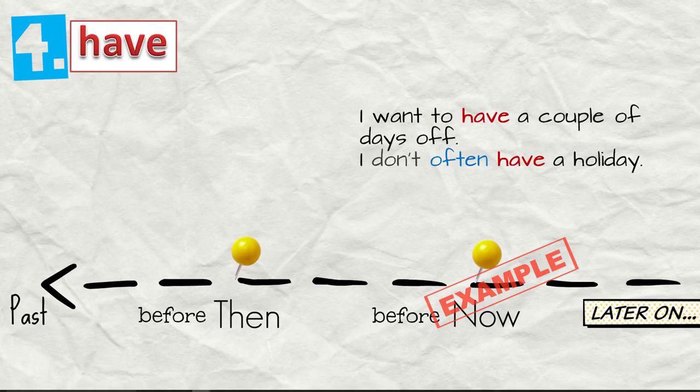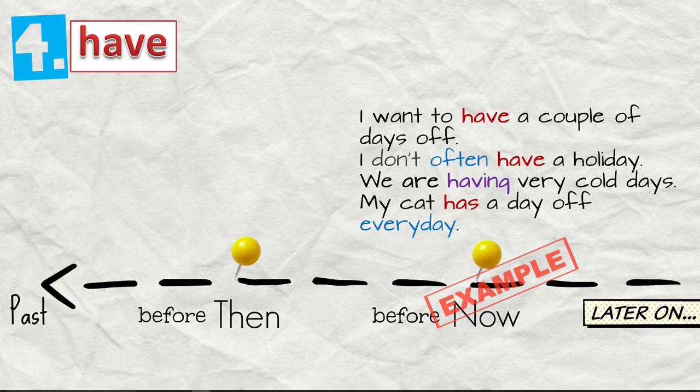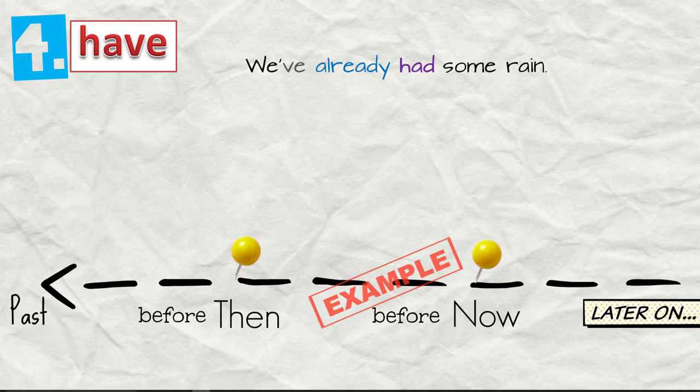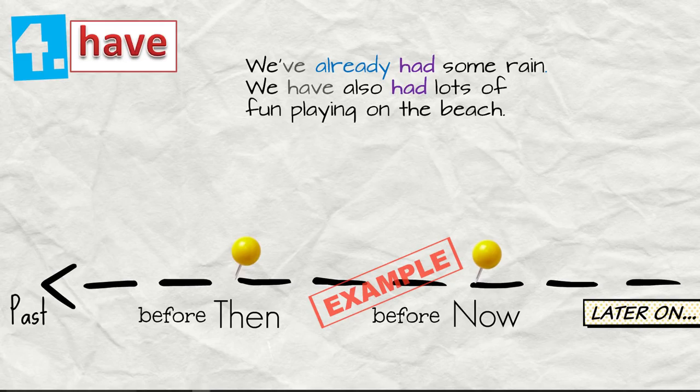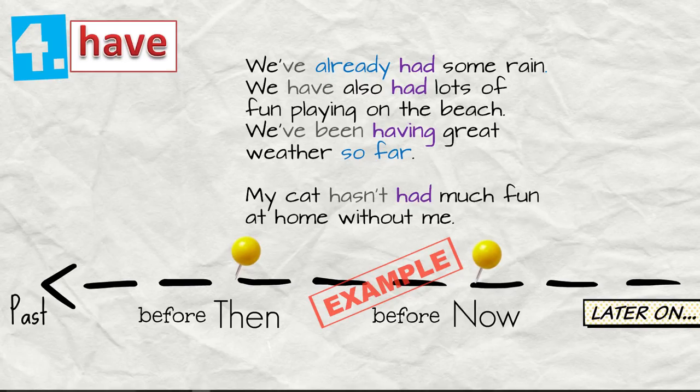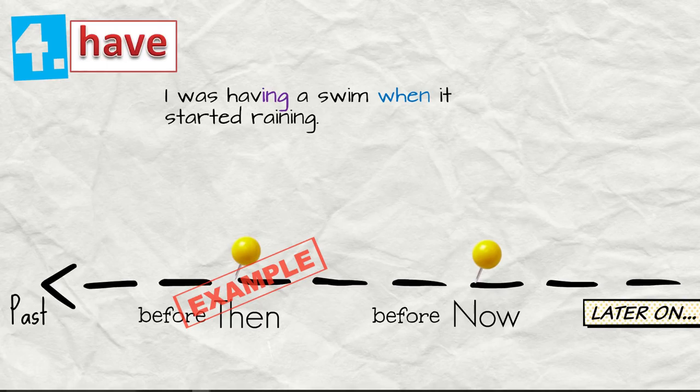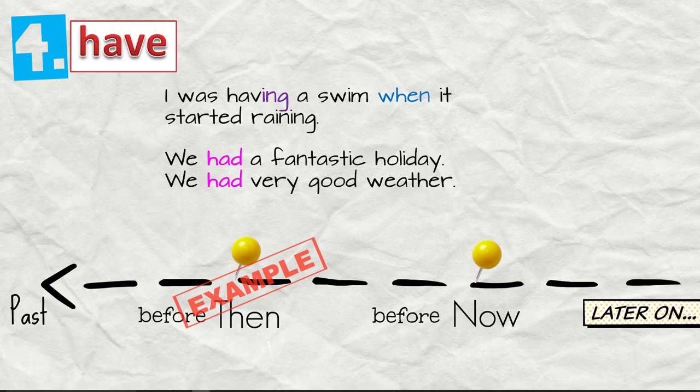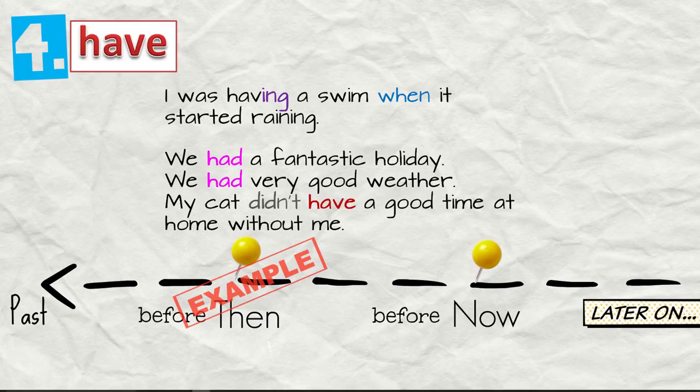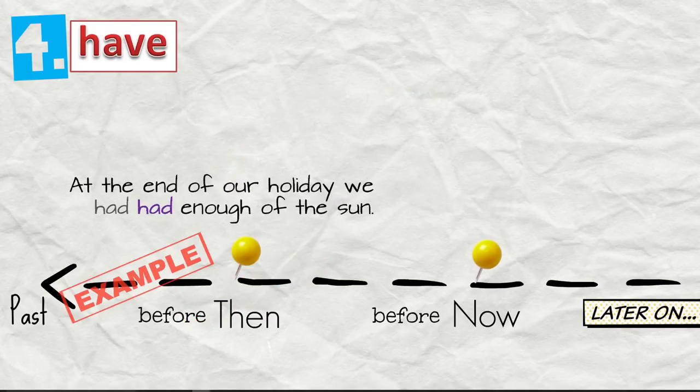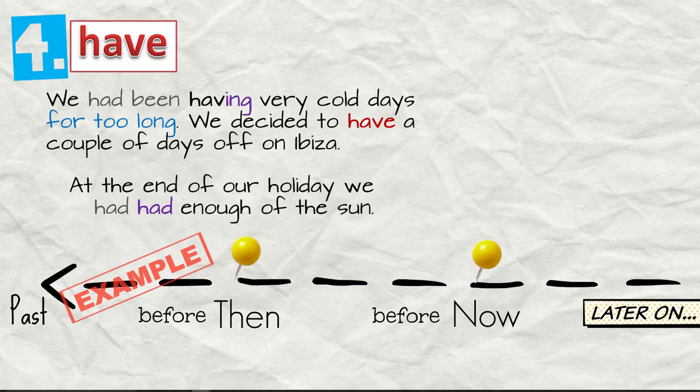I want to have a couple of days off. I don't often have a holiday. We are having very cold days. My cat has a day off every day. We've already had some rain. We have also had lots of fun playing on the beach. We've been having great weather so far. My cat hasn't had much fun at home without me. The past. I was having a swim when it started raining. We had a fantastic holiday. We had very good weather. My cat didn't have a good time at home without me. At the end of our holiday we had had enough of the sun. We had been having very cold days for too long. We decided to have a couple of days off on Ibiza.